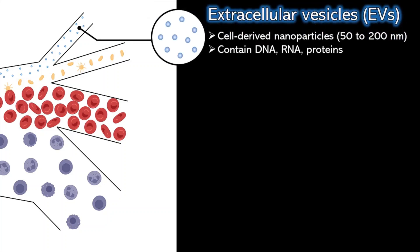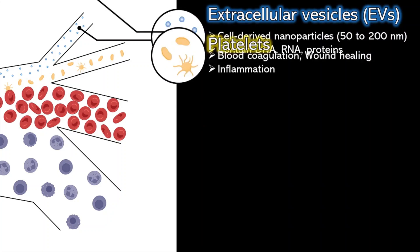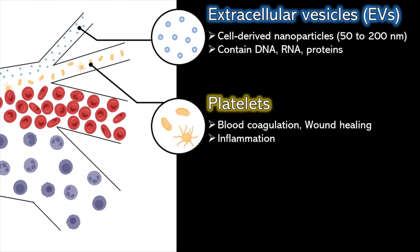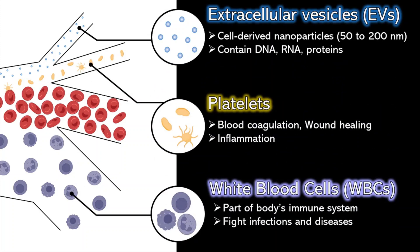Examples of isolated components include extracellular vesicles for disease detection such as cancer and metabolic diseases, platelets to assess thrombotic risks, and white blood cells for immune health profiling in infectious diseases.